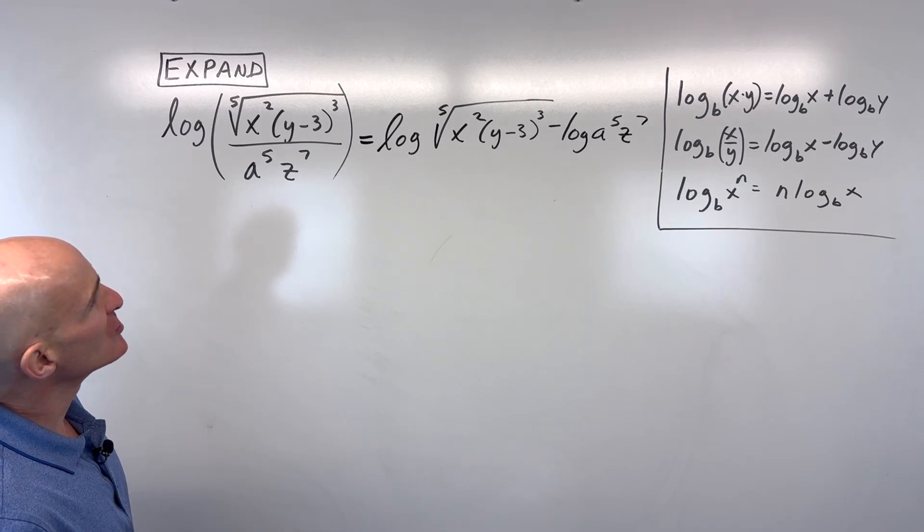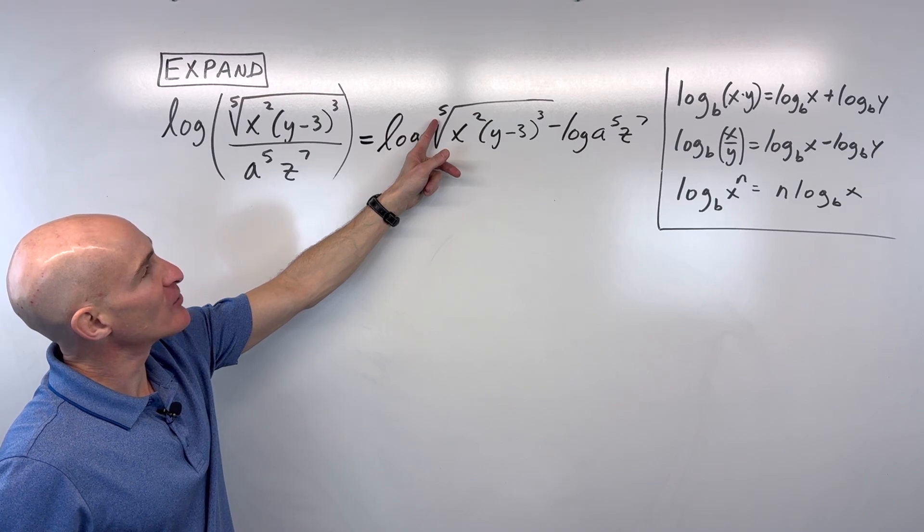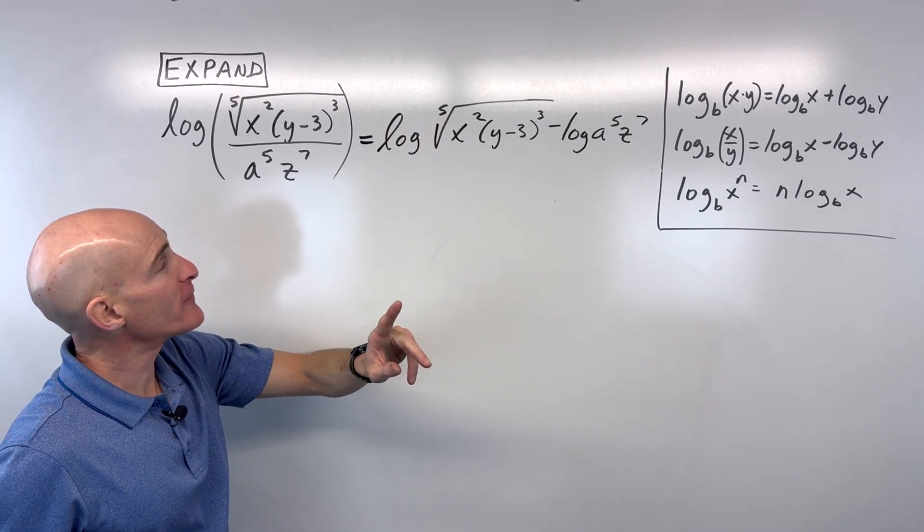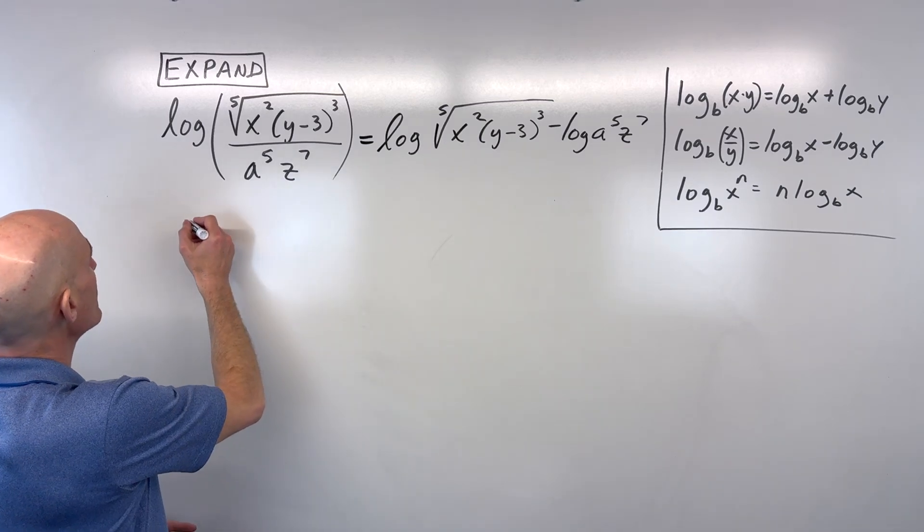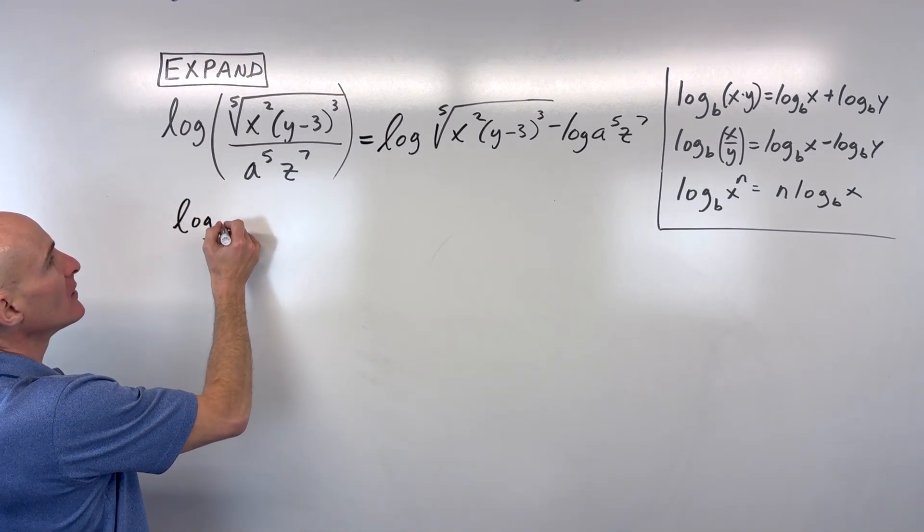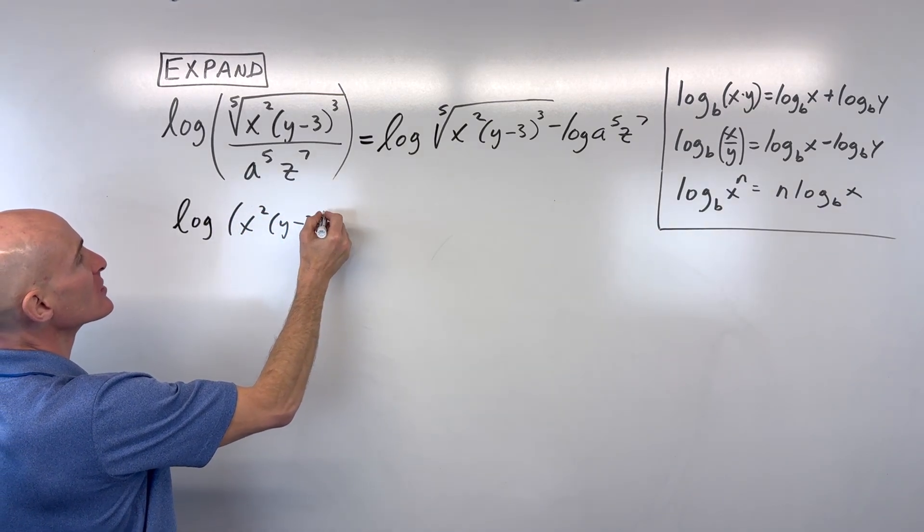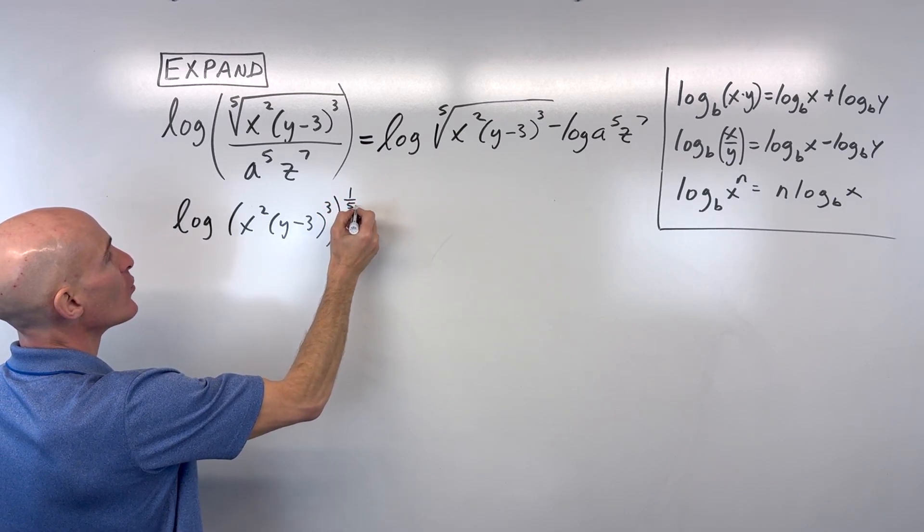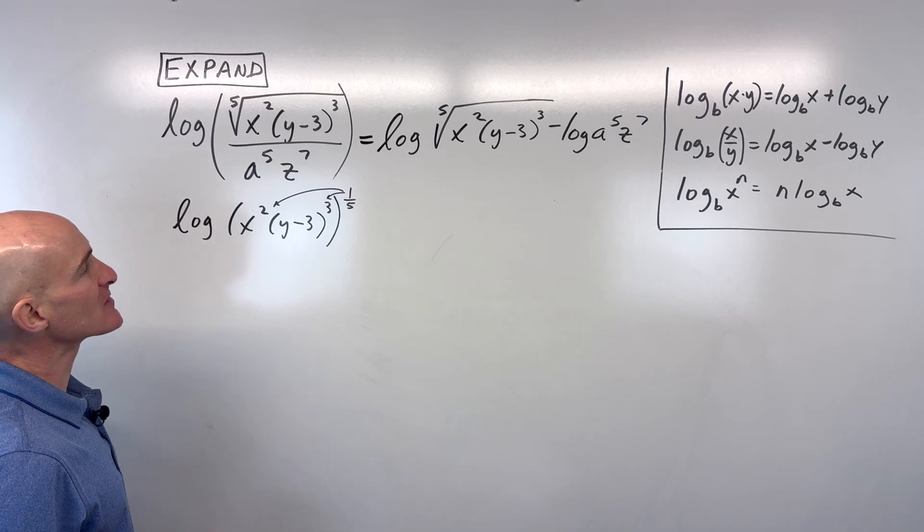Now what would you do from here? Well, this fifth root is really the same thing as the one-fifth power. So what I could do is I could rewrite this a little bit. Let's say log of x squared y minus 3 to the third. Instead of the fifth root, we could say the one-fifth power. And then remember, power to power, we multiply those exponents.